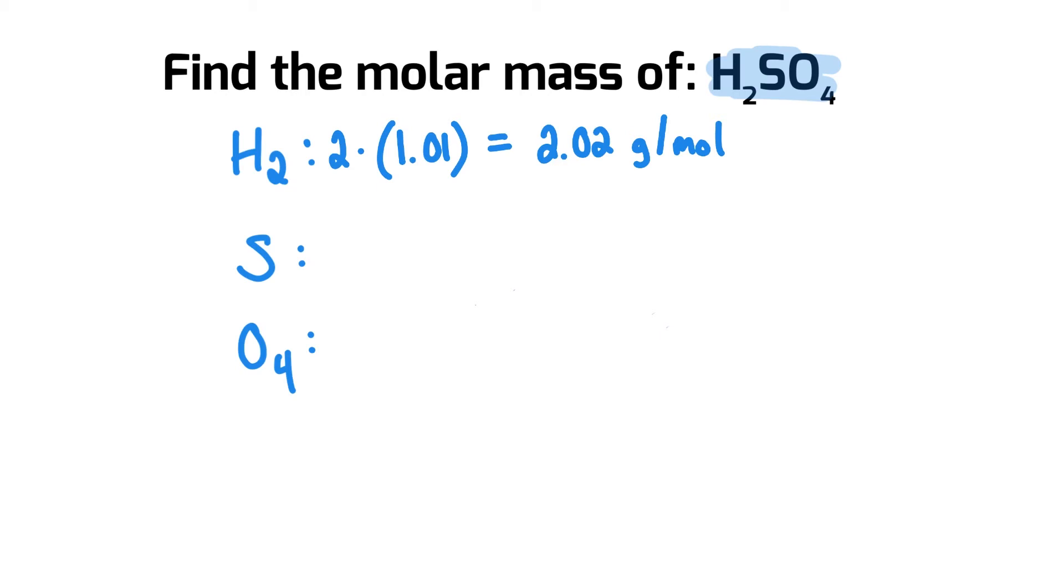For sulfur, I go back here and I look at this periodic table, and I'm going to see that it is 32.07, and we only have one of them, so that component is going to be 32.07 grams per mole as well.